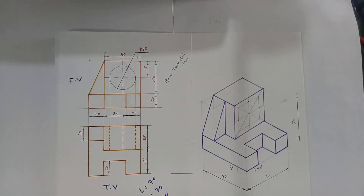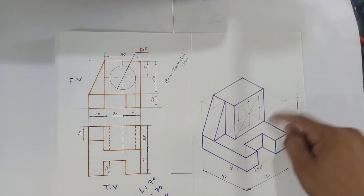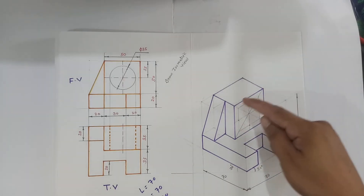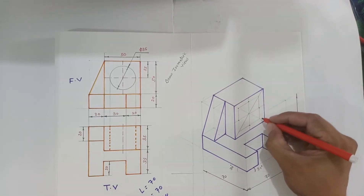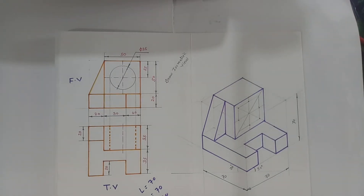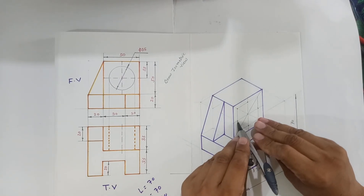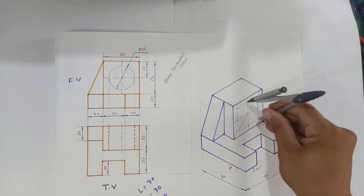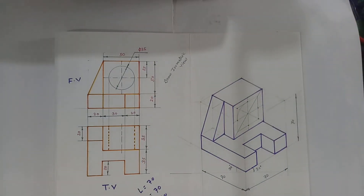We have completed the rhombus. Now apply the four-center method to draw an ellipse in this part, because the isometric view of a circle is an ellipse. To draw the ellipse using the four-center method: the first two centers are located at the ends of the shorter diagonal of the rhombus. Using the first two centers, measure to the midpoint of the opposite edge and draw an arc.